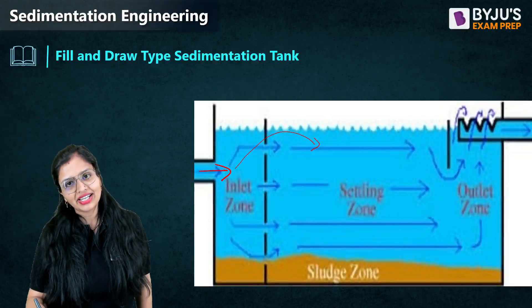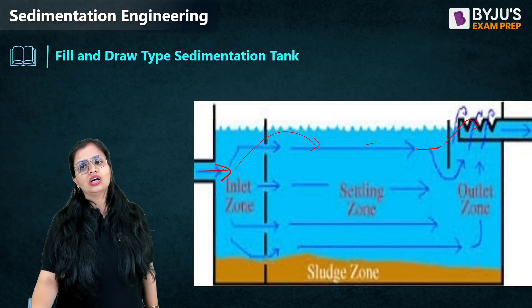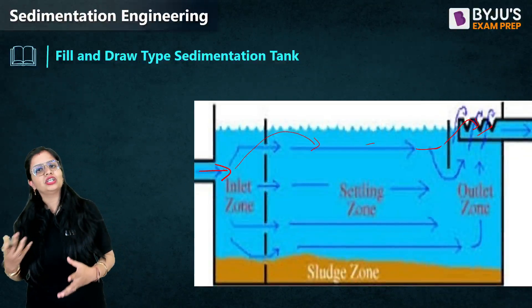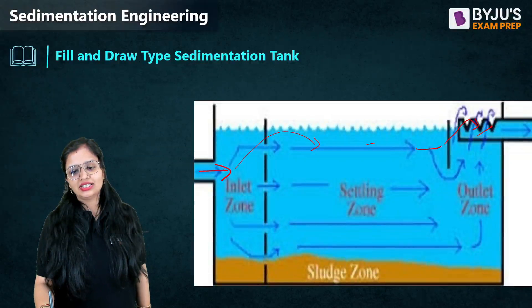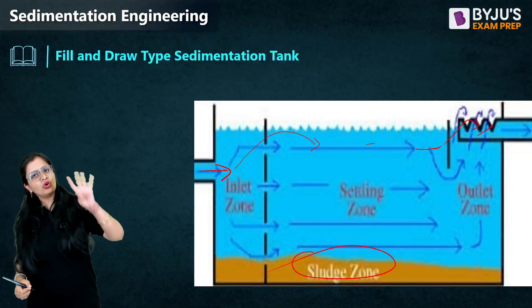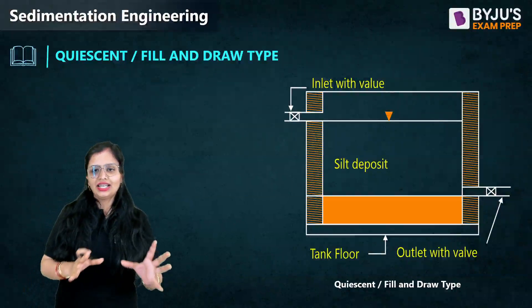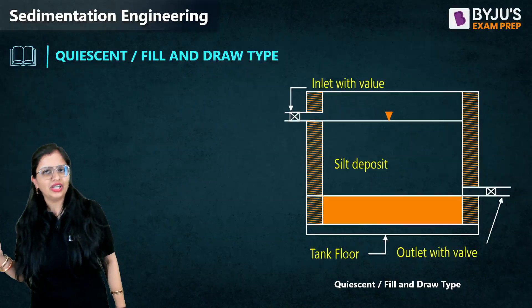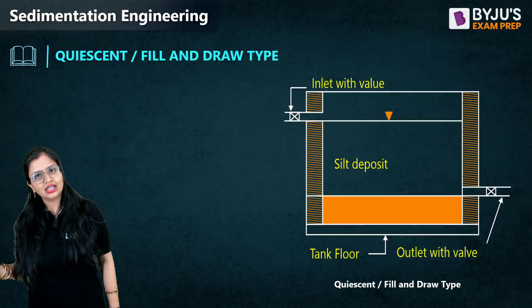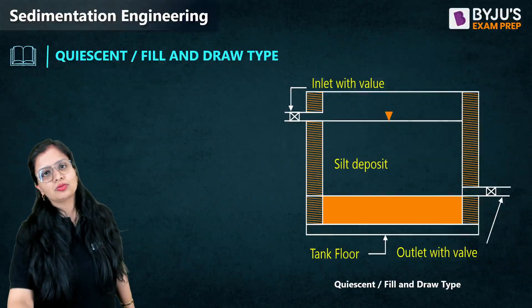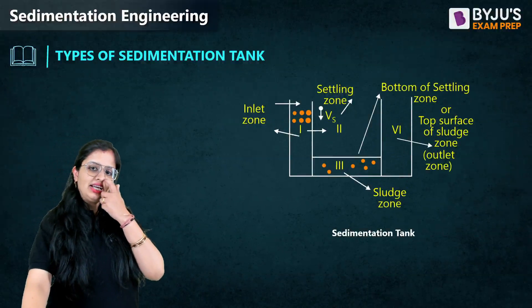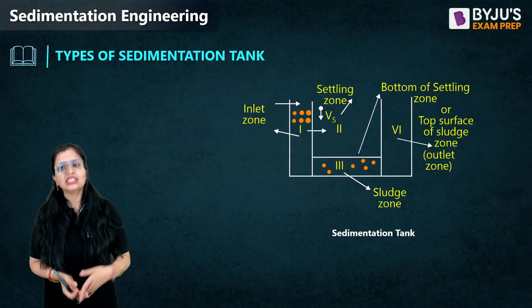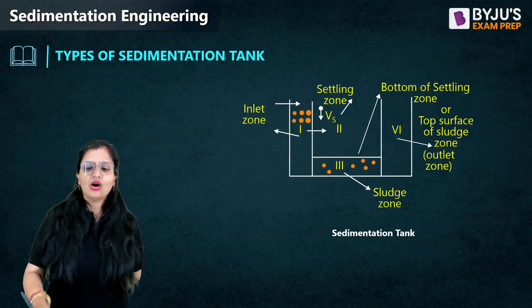After settling takes place, the settled water goes to the outlet. The solids which settle down, combined with water, form sludge — that's why we have a sludge zone. So there are four zones: inlet zone, settling zone, sludge zone, and outlet zone. You can see this in the diagram: the inlet, where silts deposit, the tank floor, and a valve. The valve is provided for proper regulation so that suspended solids settle and we achieve higher efficiency.